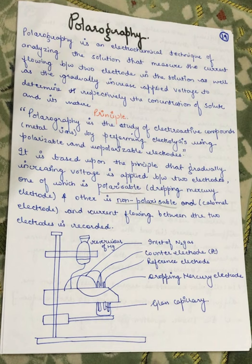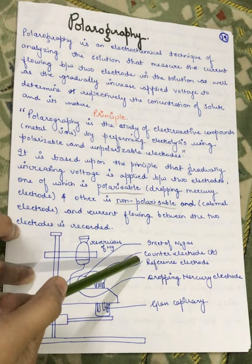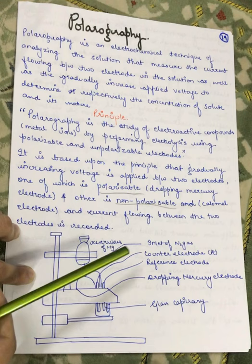This is the apparatus assembly for polarography. We have a glass capillary, which forms our dropping mercury electrode. There is also a reference electrode, a counter electrode made of platinum, an inlet for nitrogen gas, and a reservoir of mercury. This is the complete assembly apparatus.